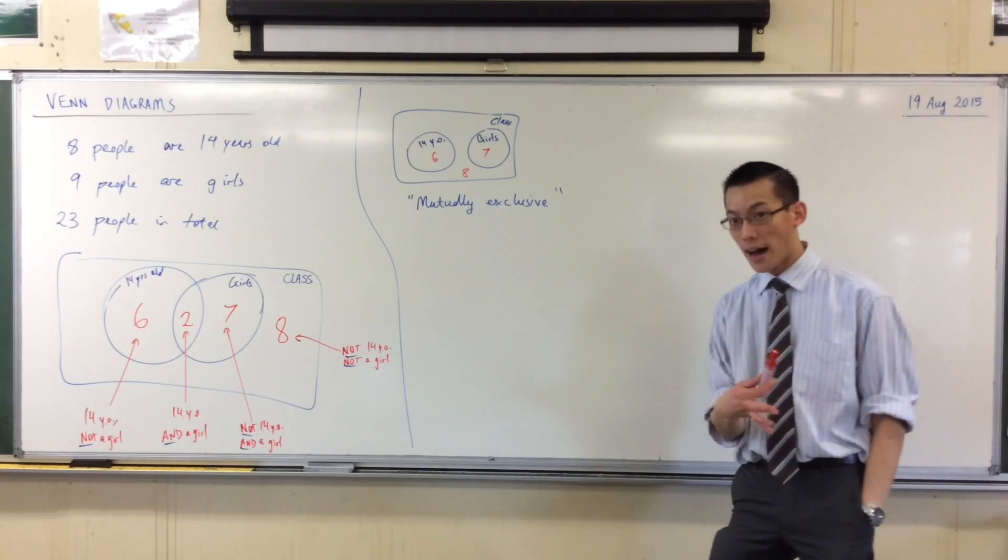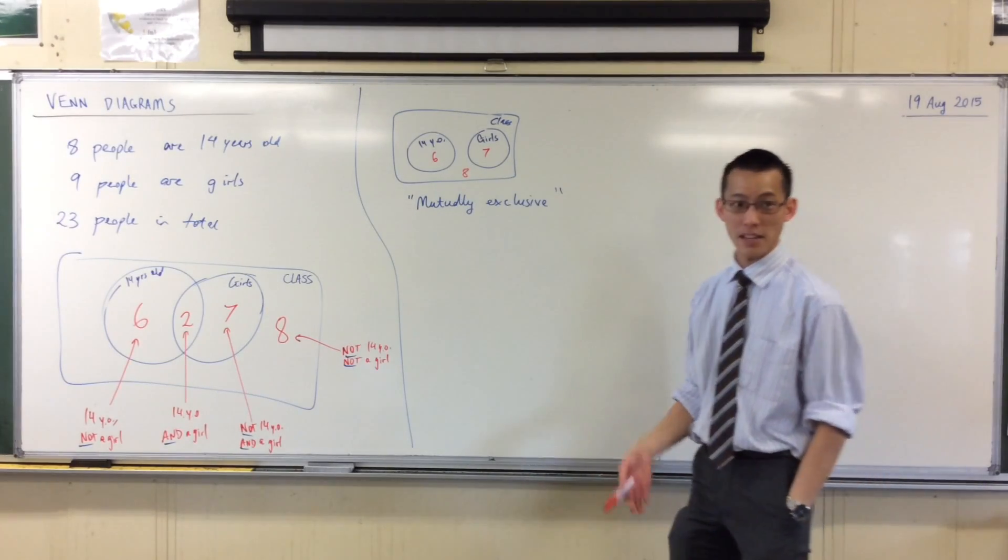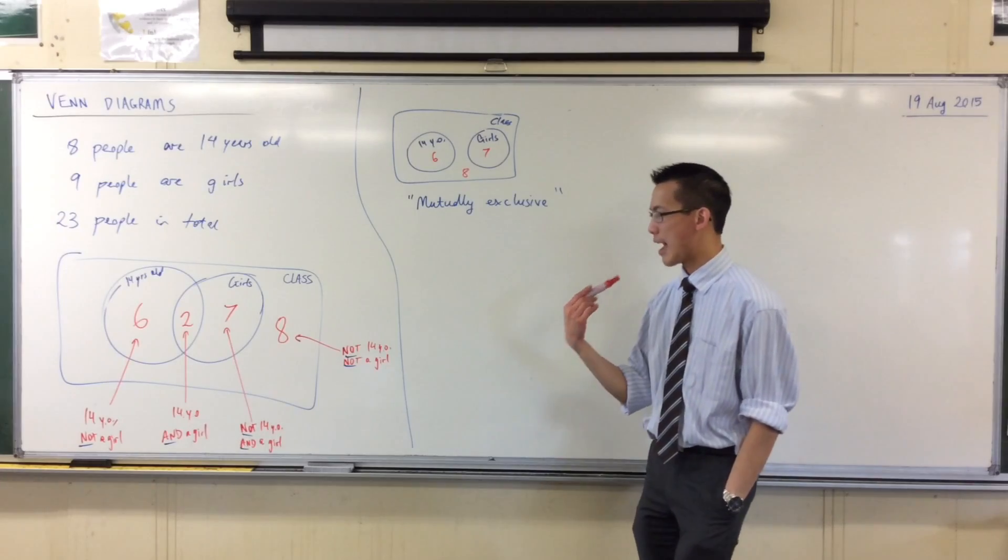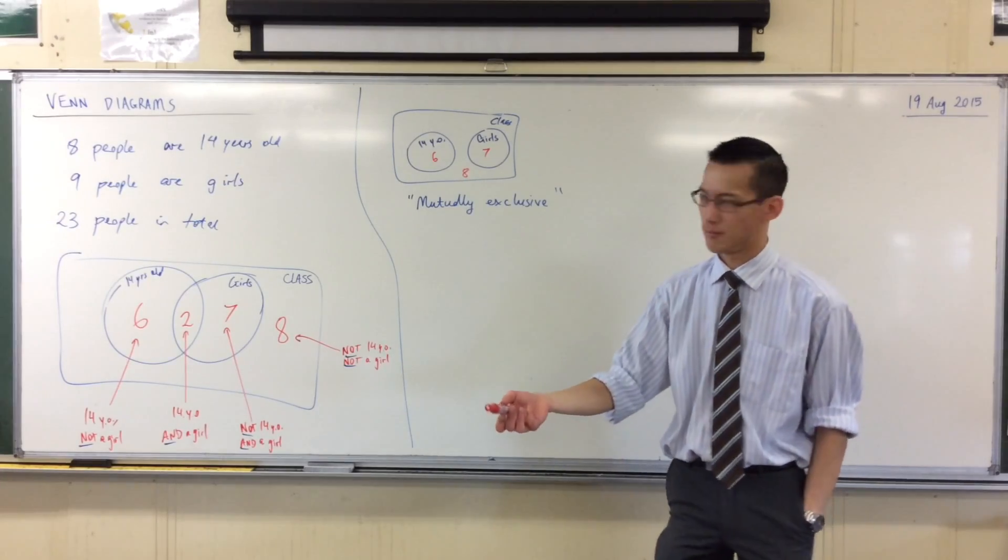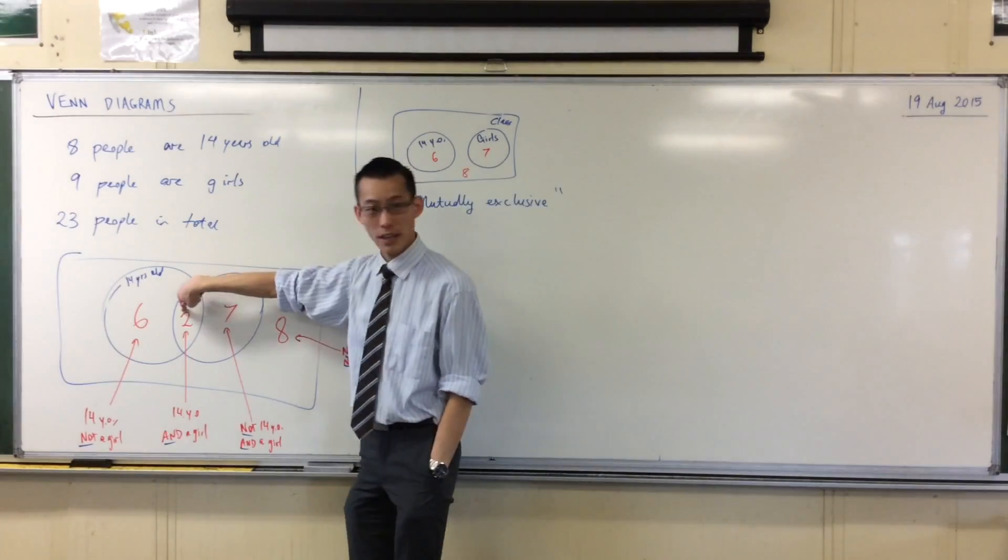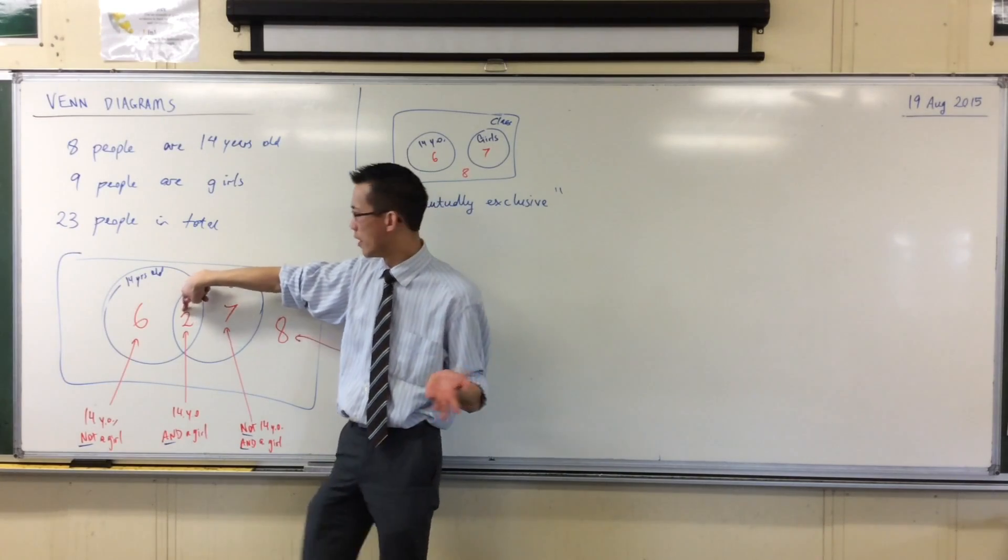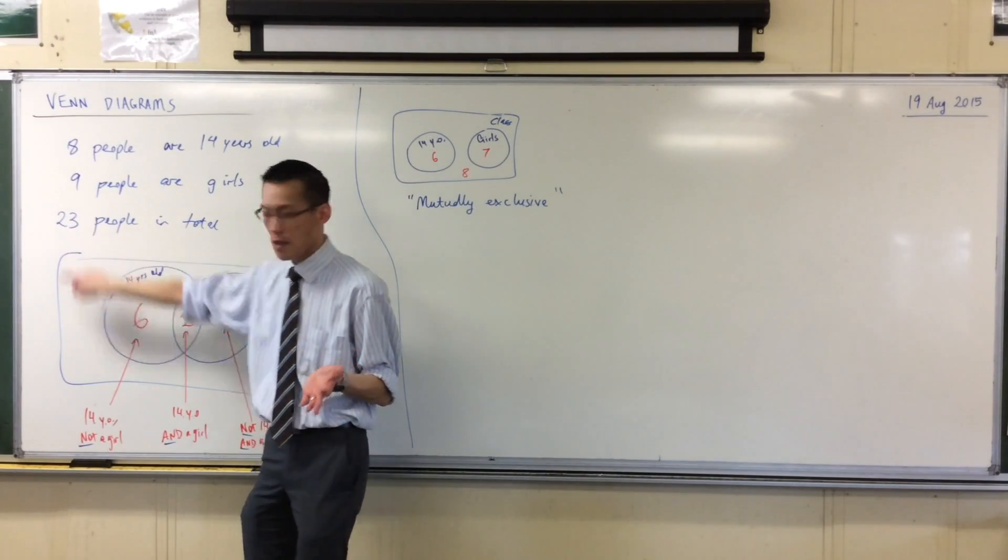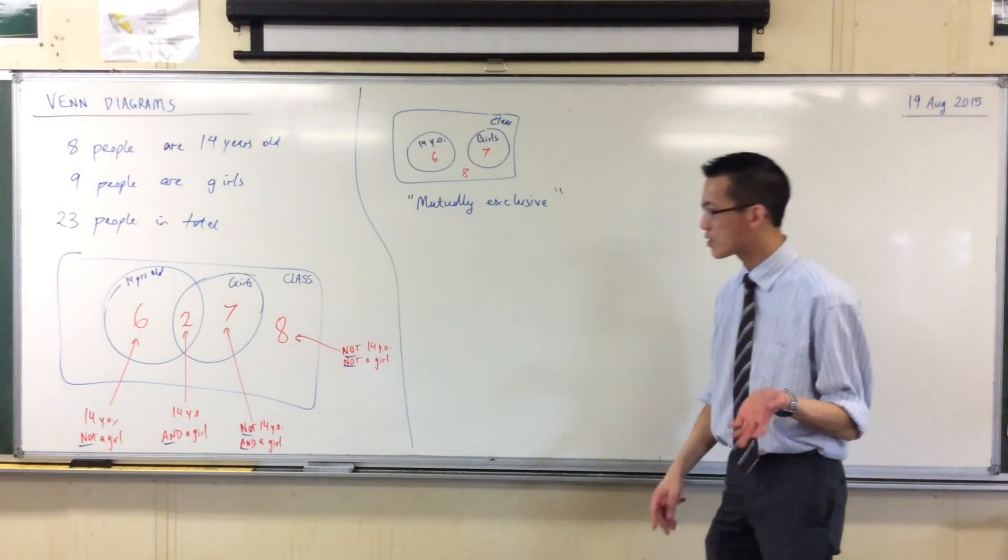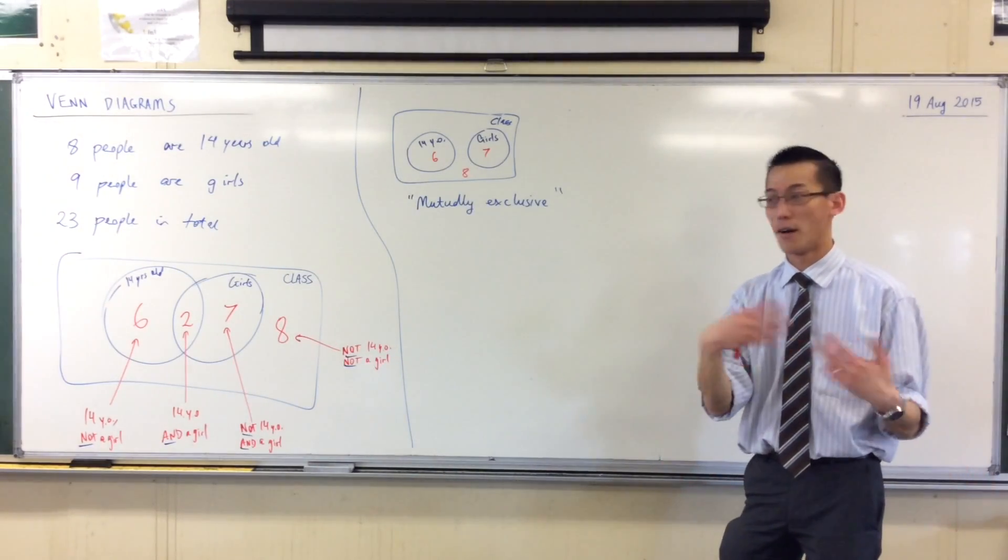Now you can see we can use this to ask any combination of questions. For instance, if I ask you now, what's the probability of picking someone who is a 14 year old girl? That's going to be these people here, two out of what? It'll be two out of 23. I can ask another question. I could say, of the boys, of the boys, what's the probability that I pick someone who is 14 years old?